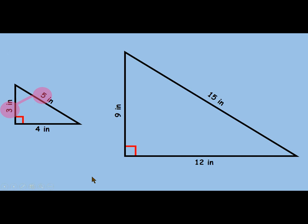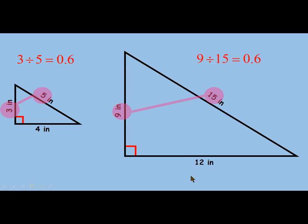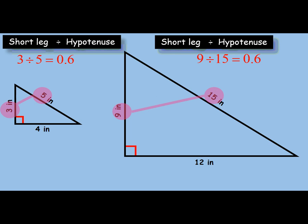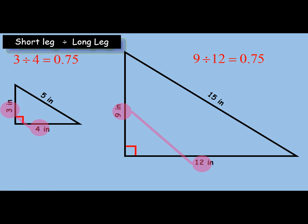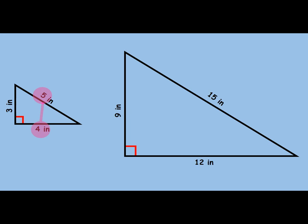What we didn't talk about is that there is a consistent ratio within each triangle. Here in the small triangle, we take the short leg, the 3, and divide it by the hypotenuse: 3 divided by 5 is 0.6. If we divide the corresponding measurements in the larger triangle — 9 divided by 15 — they're different numbers, but we get the same result: 0.6. We can do this with any pair of sides. Short leg divided by long leg gives 0.75 in both triangles. Long leg divided by hypotenuse gives 0.8 in both: 4 divided by 5 is 0.8, and 12 divided by 15 is also 0.8.